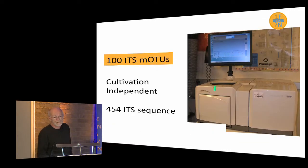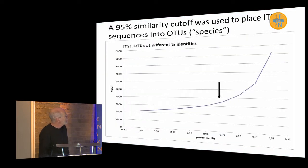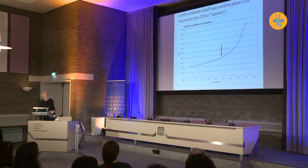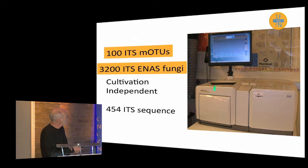Then Tom wanted to see what was there with 454. We amplified with a fungal-specific primer, screened the sequences for quality, went with ITS1 which is the most variable, had 800,000 sequences to work with, and dropped the singletons from most of our analysis figuring they might be errors. To determine what's an OTU you have to think about the variation. As you restrict taxonomic units to closer and closer identity, there's an inflection and you get a huge number of OTUs — these are probably errors. So somewhere between 94 to 95 percent identity, Tom found 3,200 fungi — a multiplier of 32.